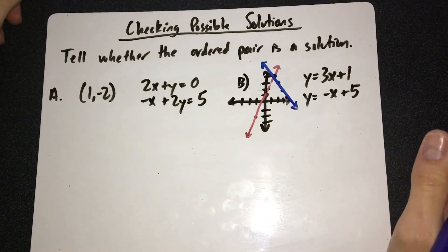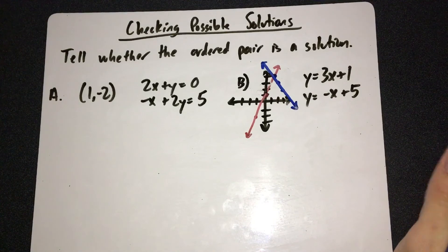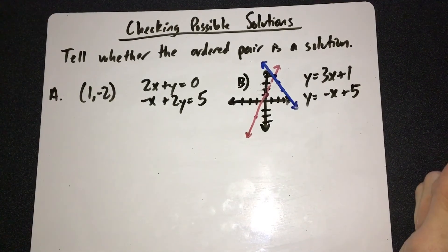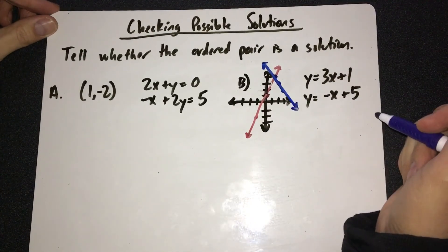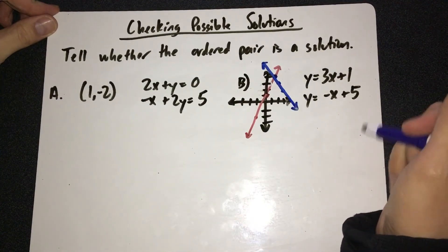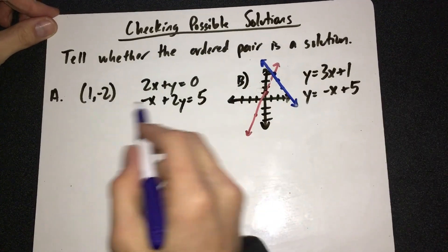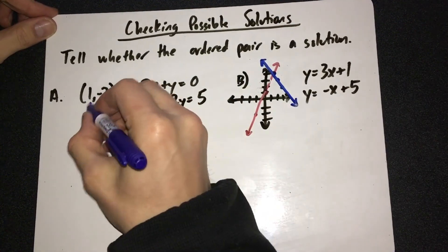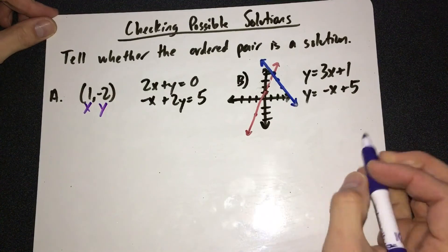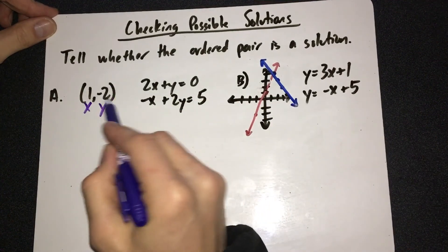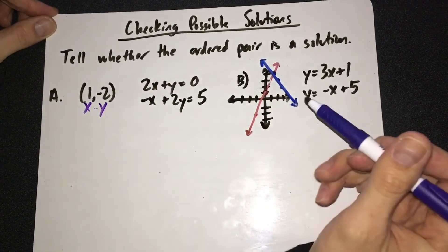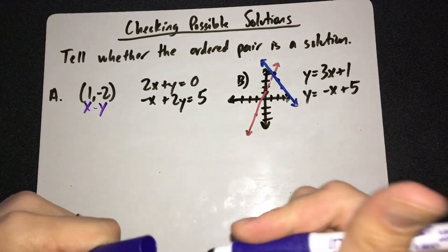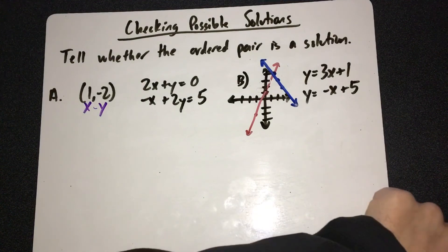Today's questions are going to start out super simple. They're going to have you check some solutions — they'll give you a possible answer, and all you need to do is say yes or no: is that the right answer? The way you do that is by plugging in the x and the y into each equation and seeing if it's true or false. Sometimes the format will give you a possible x and a possible y.